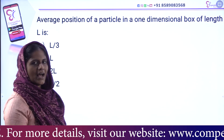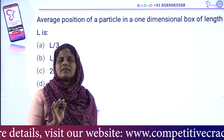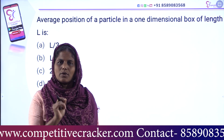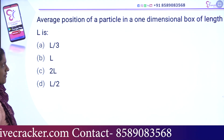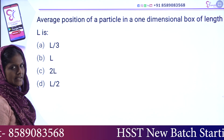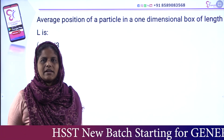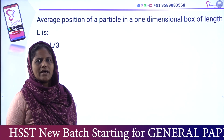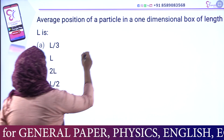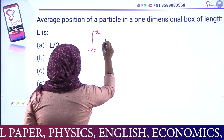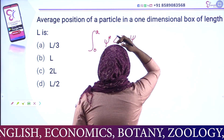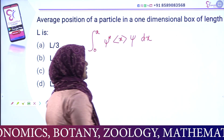Next question. We will discuss the complete problems in quantum chemistry. The first question is: the average position of a particle in a one-dimensional box of length L is what? The equation for the average value is the expectation value integral from 0 to a of ψ* times position times ψ dx.